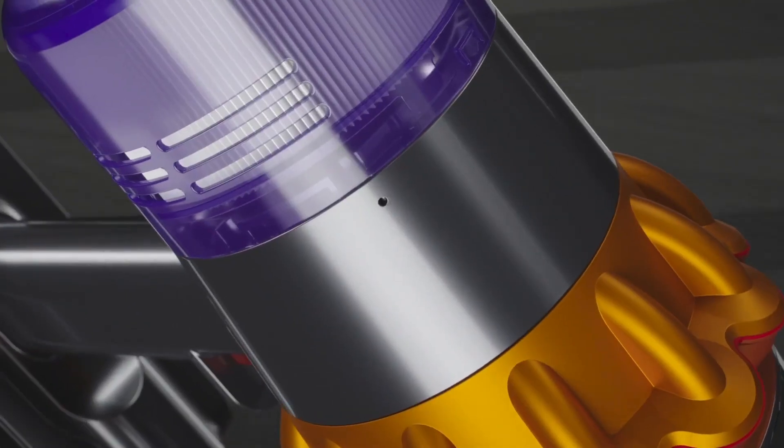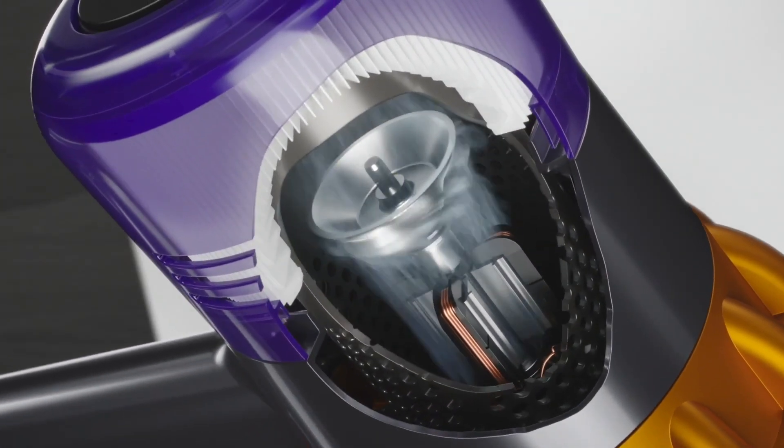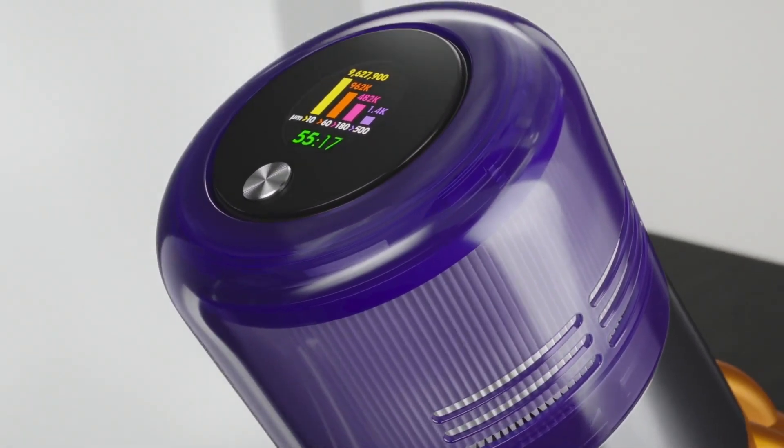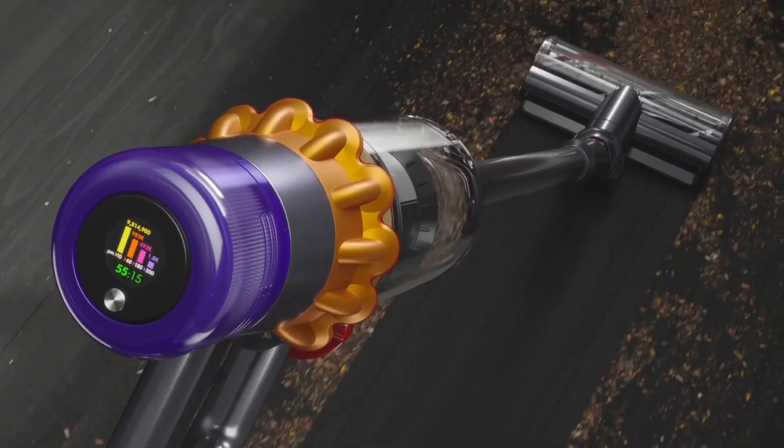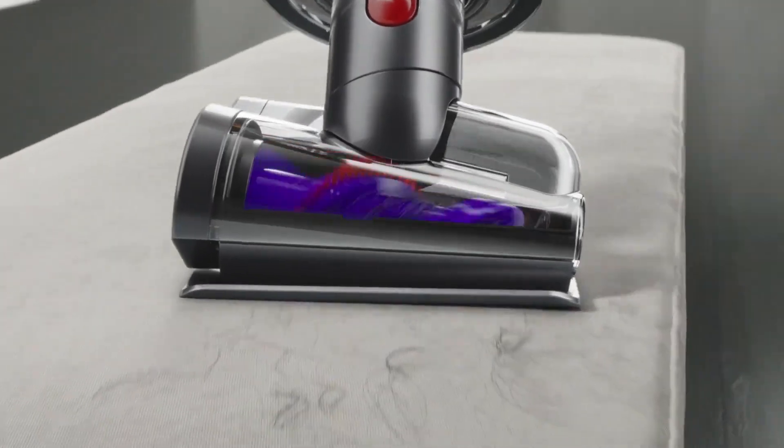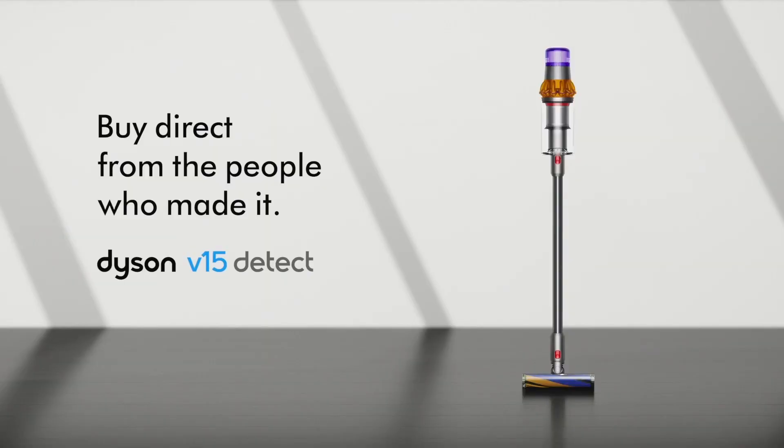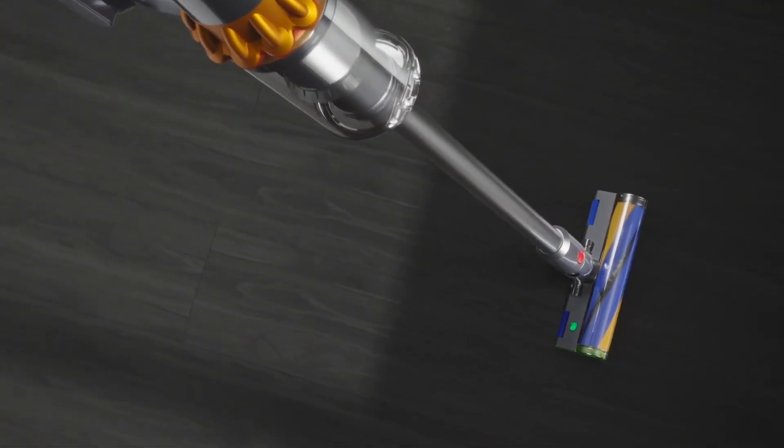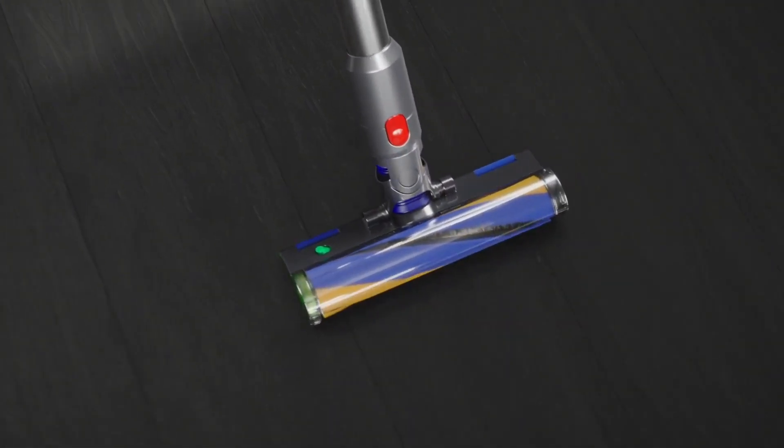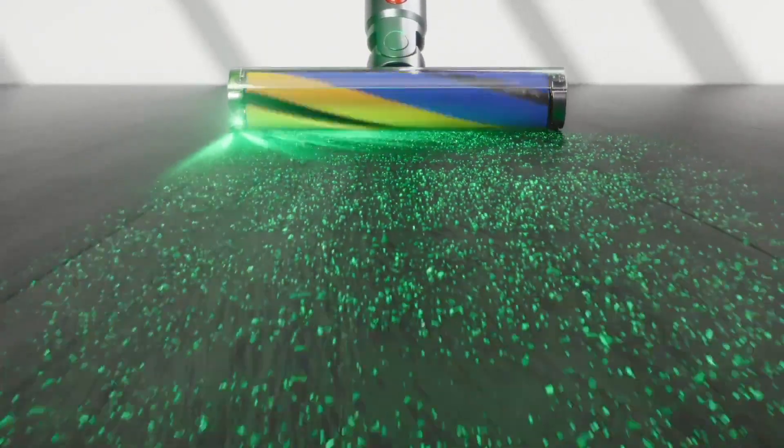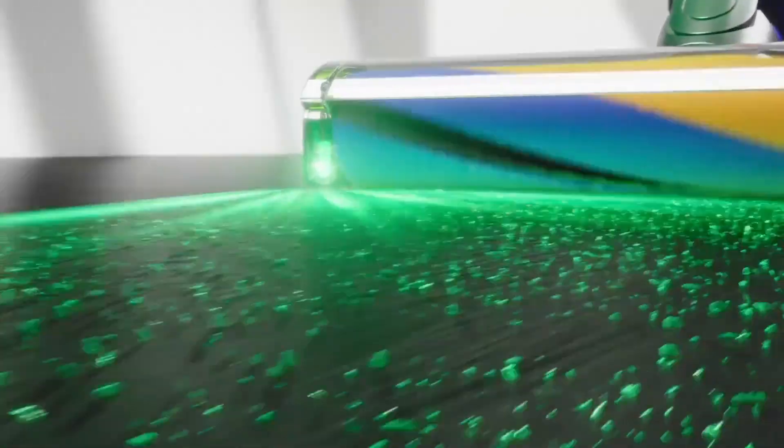The V15 Detect is powered by Dyson's latest digital motor, which spins up to 125,000 RPM, generating up to 230 air watts of suction power. Its advanced filtration system captures 99.99% of particles as small as 0.3 microns, making it an excellent choice for allergy sufferers. Additionally, the vacuum's whole machine filtration ensures that the air expelled is cleaner than the air you breathe. The V15 Detect also features a high-capacity battery that offers up to 60 minutes of fade-free power, allowing users to clean large areas without interruption.